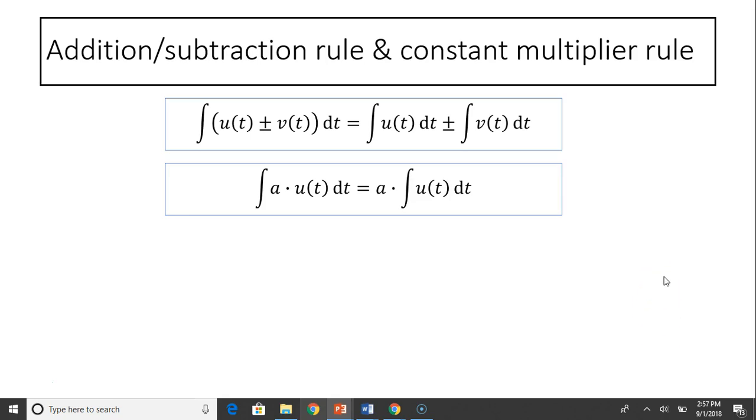Another rule is addition-subtraction rule and constant-multiplier rule. Addition-subtraction means when you have two functions adding or subtracting, the integral for the whole thing equals the integral of separate functions. The constant-multiplier rule is if you have a constant such as 3 or 5 or 12 multiplied by a function, you can factor it out then just integrate the function.